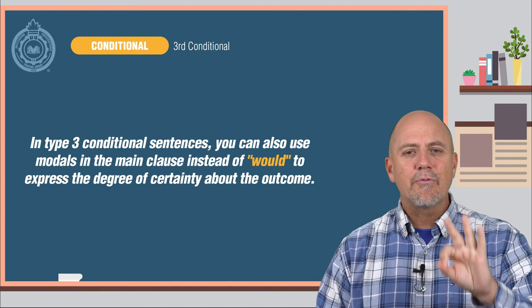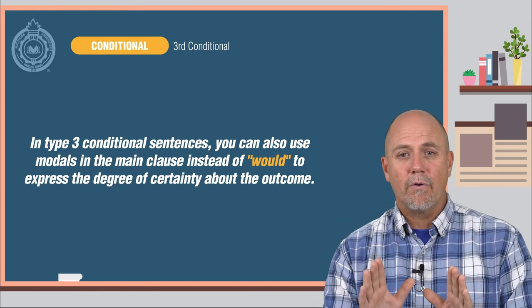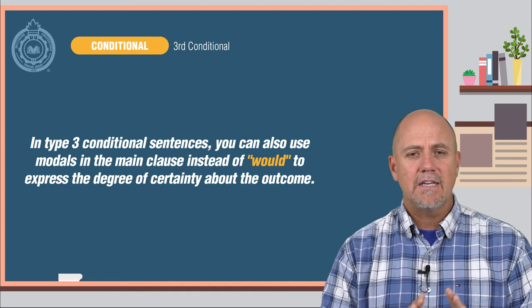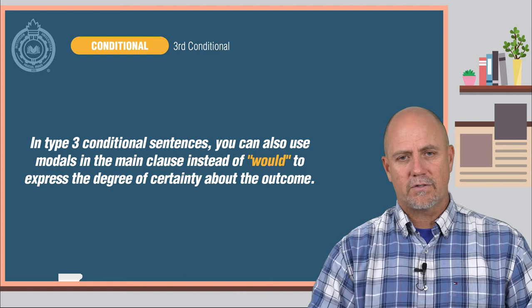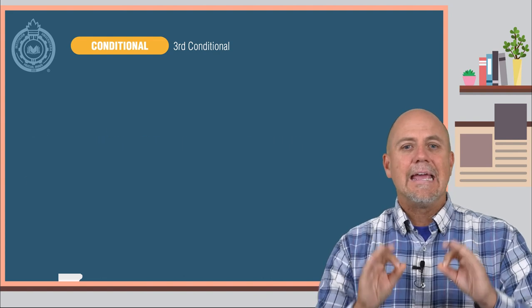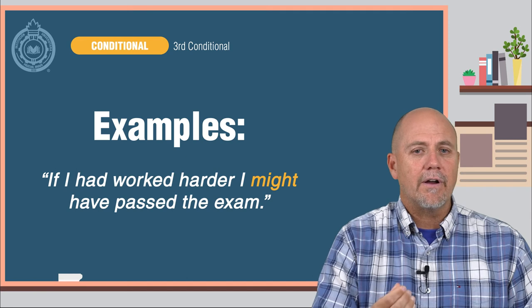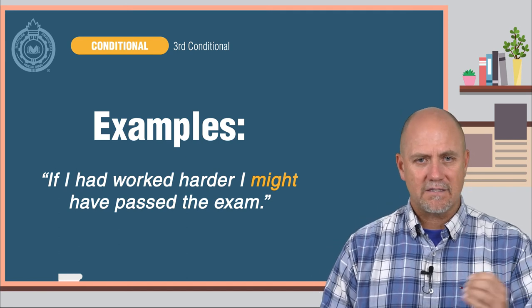In Type 3 conditional sentences, you can also use modals in the main clause instead of would to express the degree of certainty about the outcome. Here are some examples. If I had worked harder, I might have passed the exam.